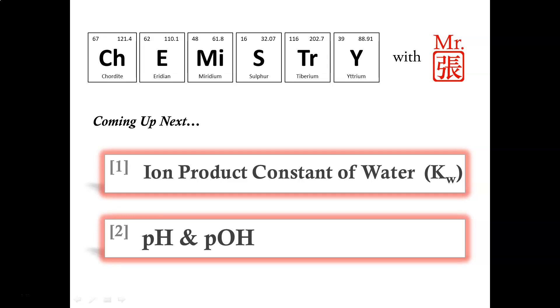In this video tutorial we will be looking at the ion product constant of water, also known as Kw, as well as a brief review of the pH and pOH scales and their simple calculations.